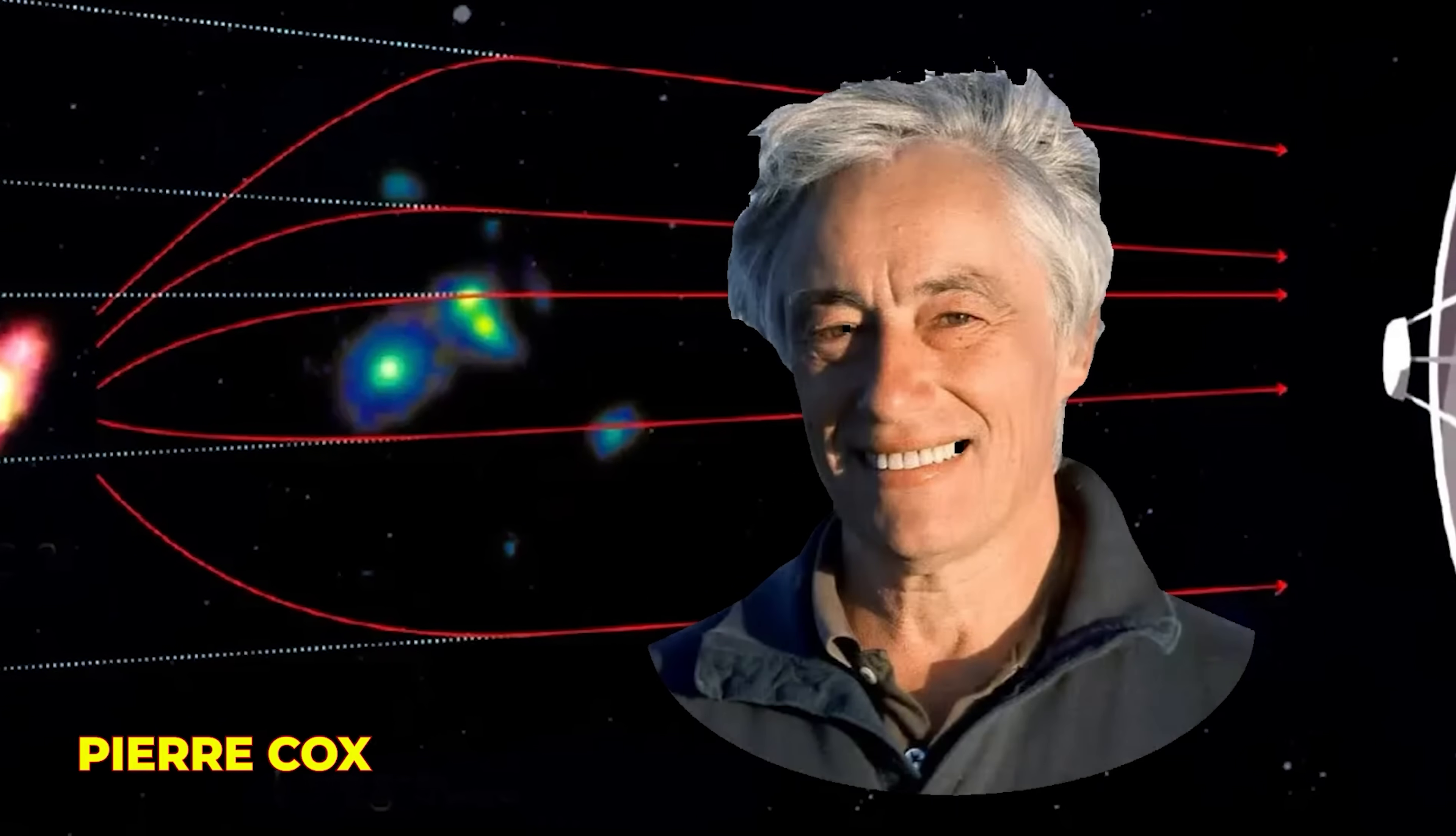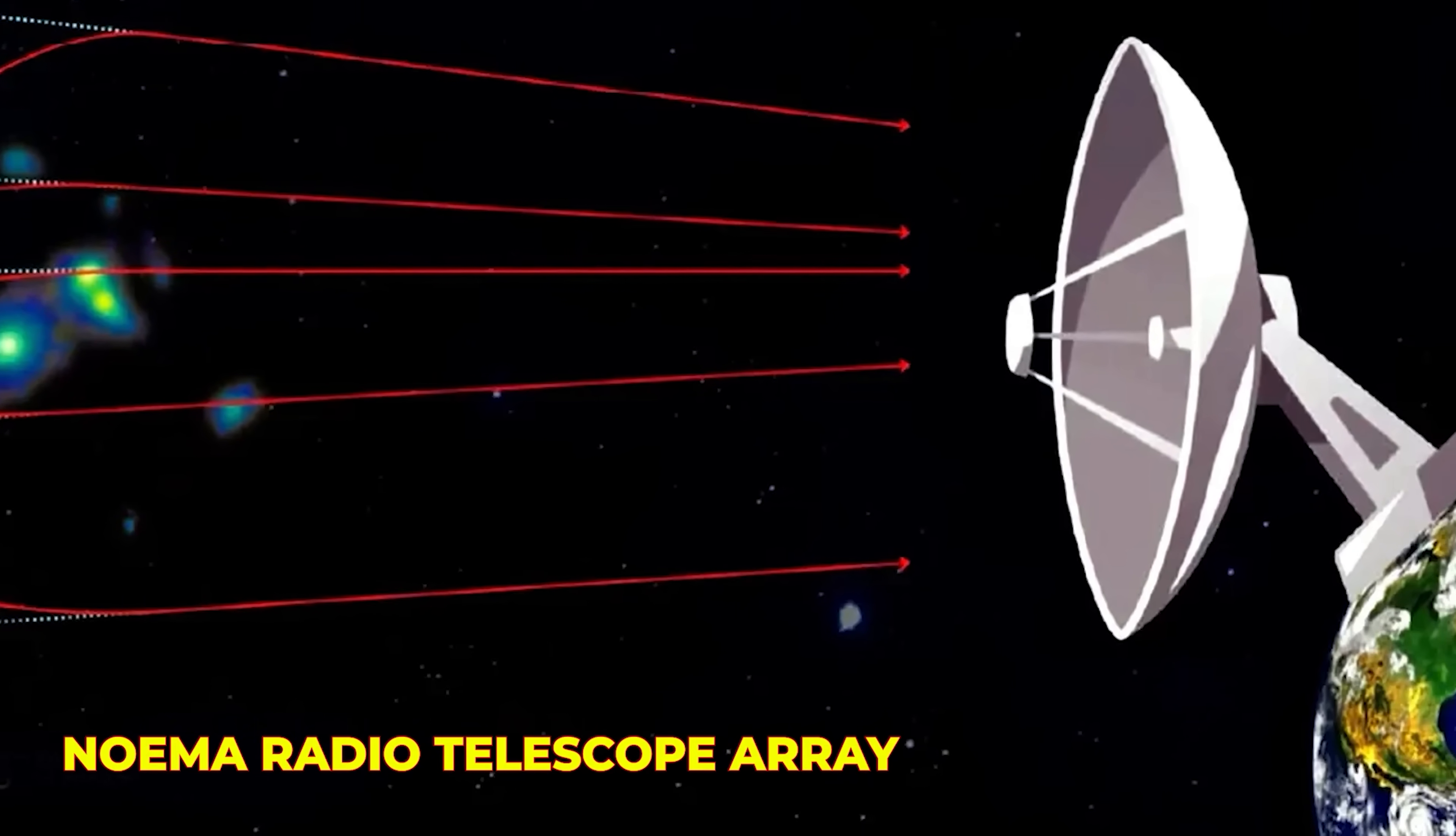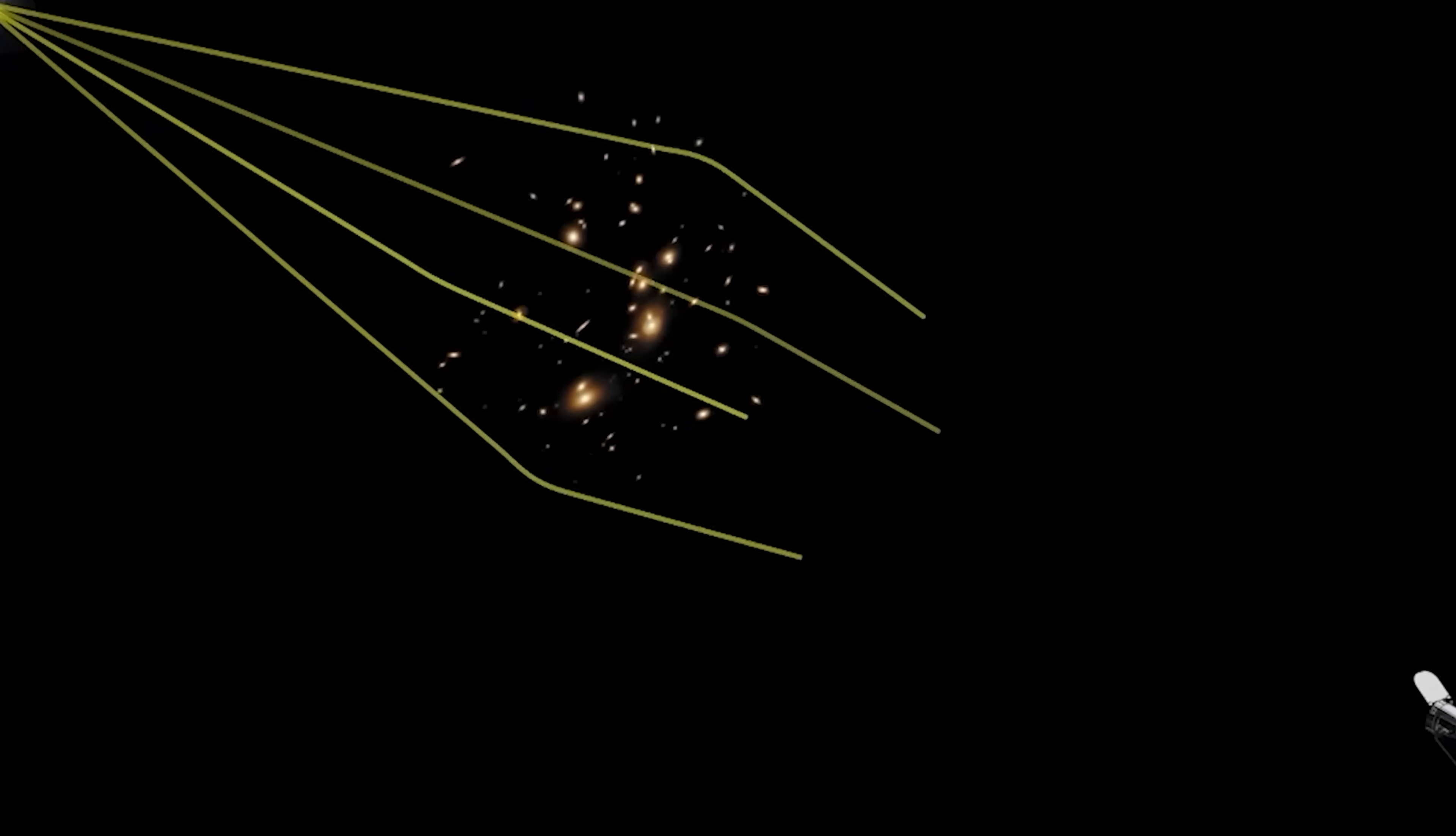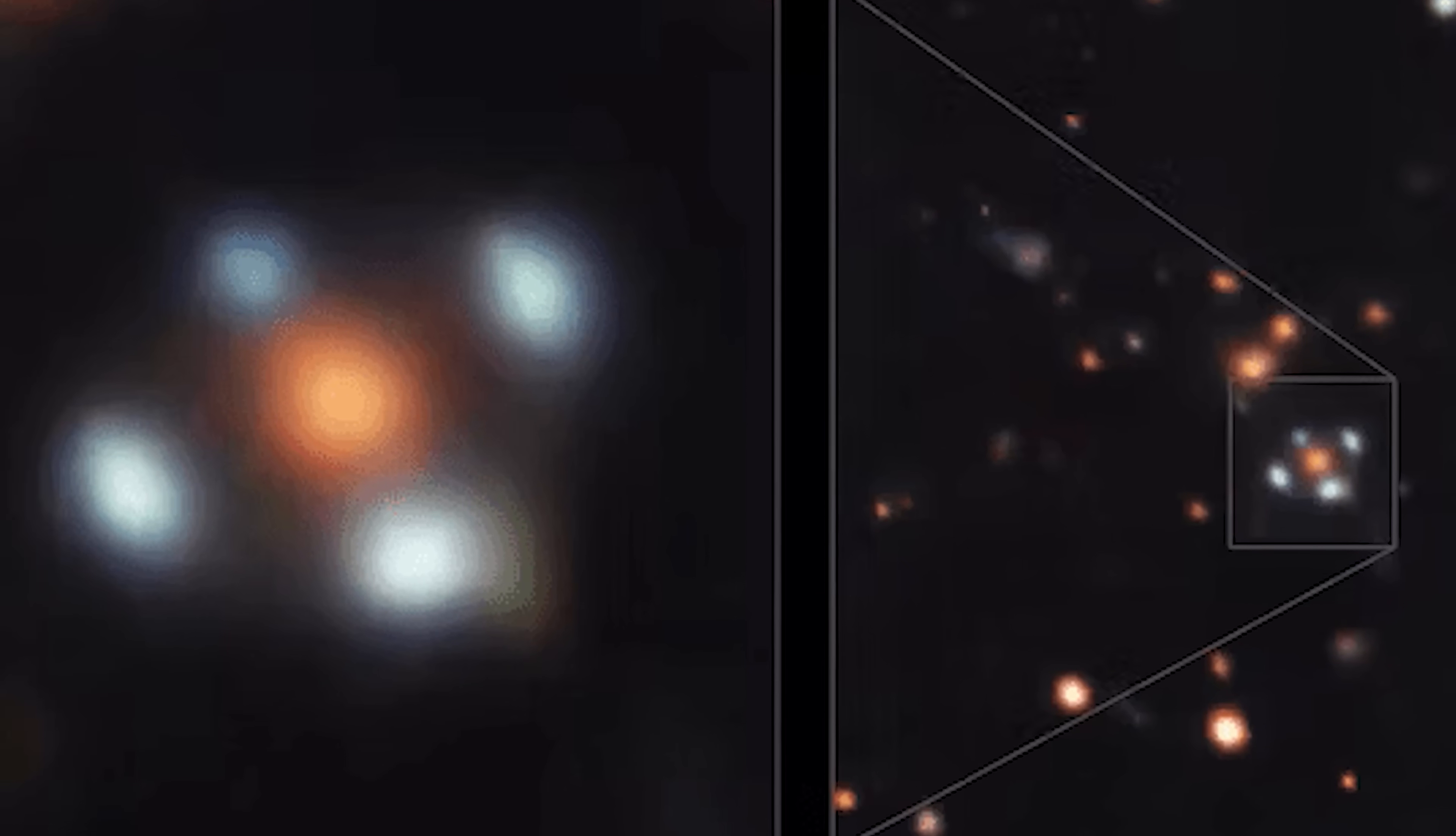When astronomer Pierre Cox analyzed data from the NOEMA radio telescope array in France, he initially saw the expected four-image cross. But then he noticed something unusual.